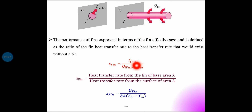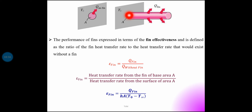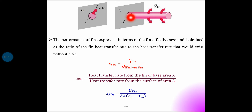Heat transfer with the fin divided by heat transfer without the fin — that is the effectiveness. Heat transfer rate from the fin of base area A, divided by heat transfer rate from the surface of the same area A. The equation is: epsilon-fin equals q-fin divided by H into A into (T0 minus T-infinity).